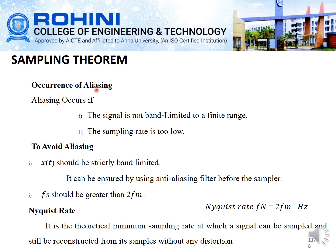Aliasing occurs when the signal is not band-limited to a finite range or when the sampling rate is too low. To avoid aliasing, x(t) should be strictly band-limited, which can be ensured by using an anti-aliasing filter before sampling. The second condition is that fs must be greater than 2·fm.